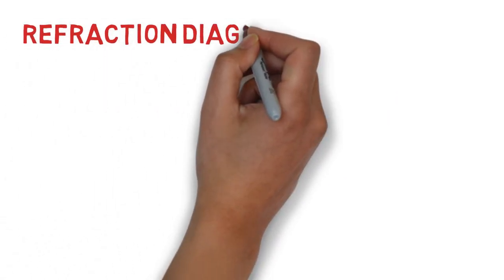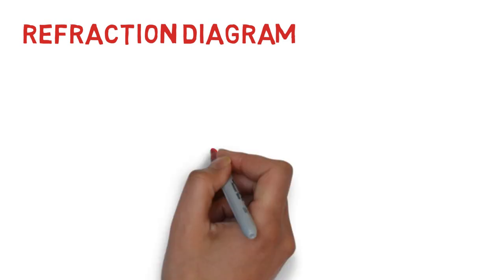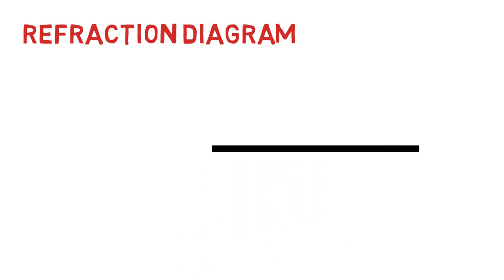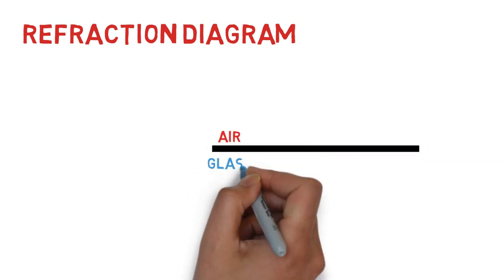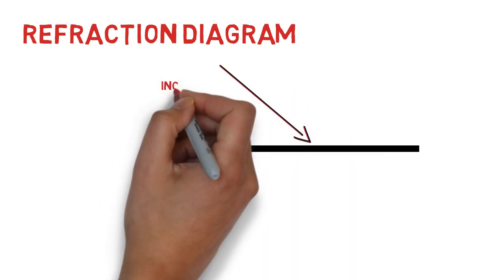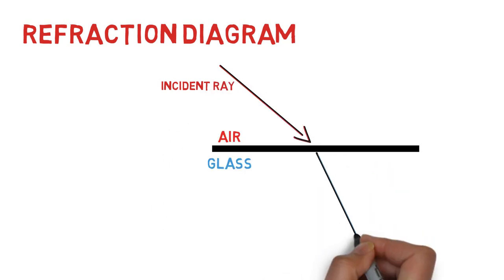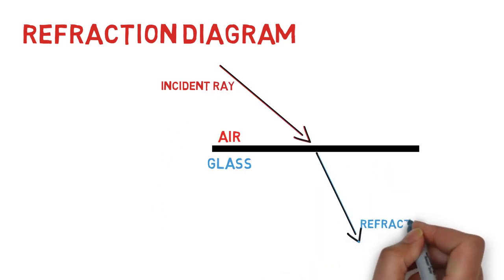Next we'll talk about refraction diagrams. Refraction or the bending of a light wave occurs when a light wave crosses a boundary into a new medium. In this diagram for example, we have a boundary between air and glass. We have an initial light ray known as the incident ray that upon passing the boundary changes direction and is now known as a refracted ray.